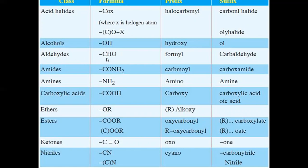Aldehydes: CHO group is called a formyl group; if aldehyde is present, the suffix 'al' is used; it is also named as carbaldehyde. Amides: C(=O)NH₂ is called a carbamoyl group; when amides are present the naming is carboxamide. For example, two carbons = ethanoxamide. Amines: NH₂ group - 'amine' will be the suffix - ethanamide, butanamide, propanamide.